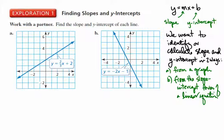Let's take a look at example a. The y-intercept is pretty easy to identify. Remember that the y-intercept is the point on the graph where the graph crosses the y-axis. If I were to put a circle here, you can see that that is y is equal to 2. So that is the point (0, 2) — the y-intercept.